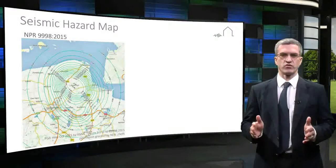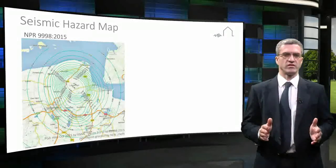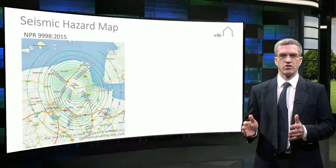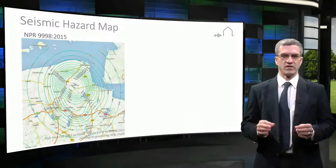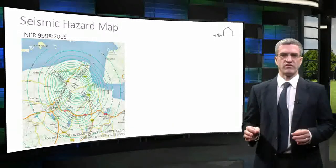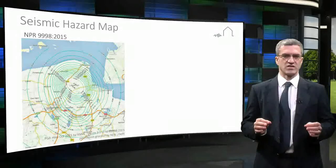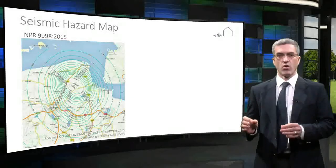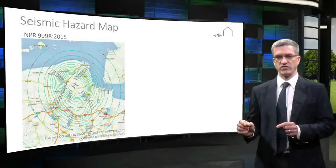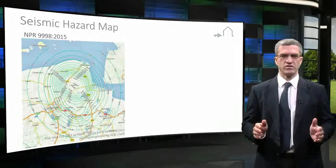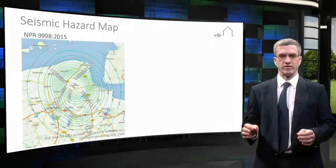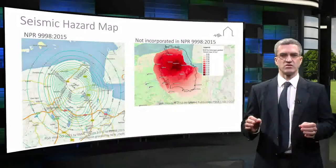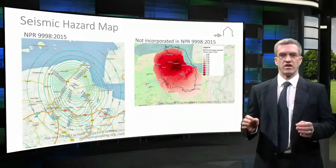Seismic hazard maps for use with Eurocode 8 are meant to be provided by individual nations. The NPR provides a seismic hazard map for the Groeningen region of the Netherlands only. This map is based on a 475-year return period earthquake event, which has a 90% chance of not being exceeded in 50 years, or a 10% chance of being exceeded in 50 years. The Groeningen region's seismic hazard map is still under development, and although an update is provided by KNMI, this has not yet been incorporated in the current NPR.